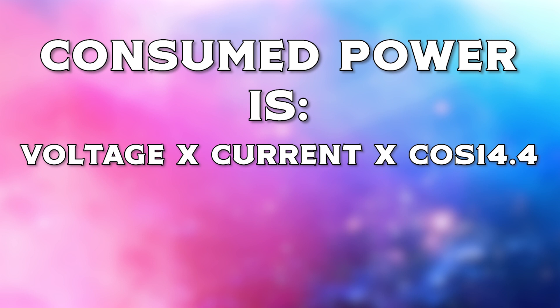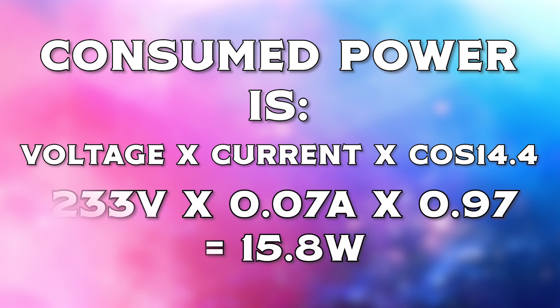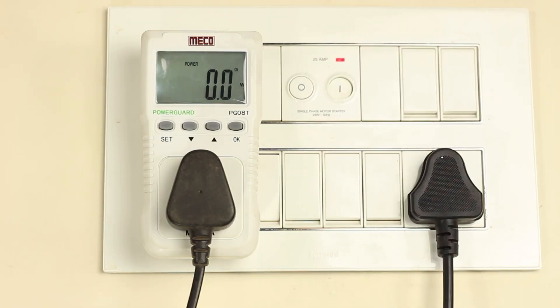So the real consumed power of the 18W bulb is voltage × current × cos(14.4°) = 15.8W. My power meter verifies that the power factor measurement is correct, and it also says the bulb is 15.6W, not 18W. That's how you have to measure AC power — not just multiplying voltage and current like DC.